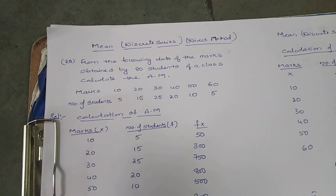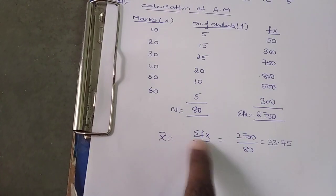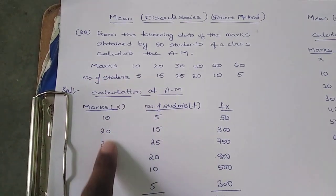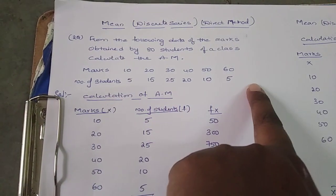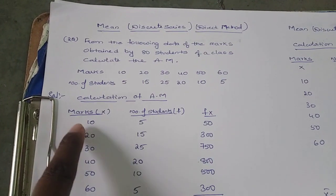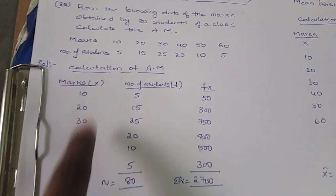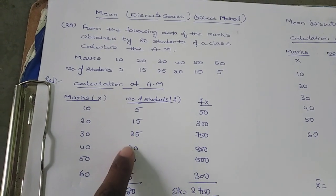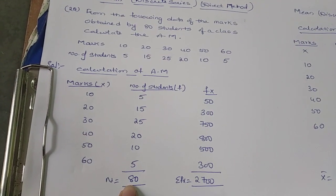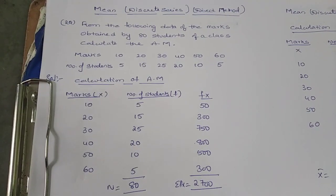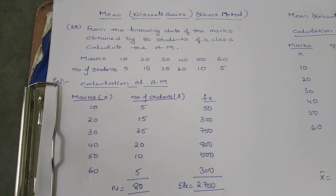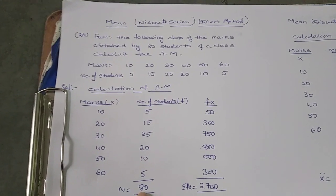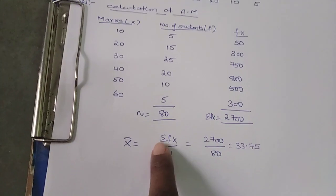In case of discrete series, the mean formula is: Mean = σfx / n. Here x represents the marks — 10, 20, 30, 40, 50, 60 — and f represents the number of students — 5, 15, 25, 20, 10, 5. Note that in discrete series, n is equal to the total of frequency, not just the number of items as in individual series.